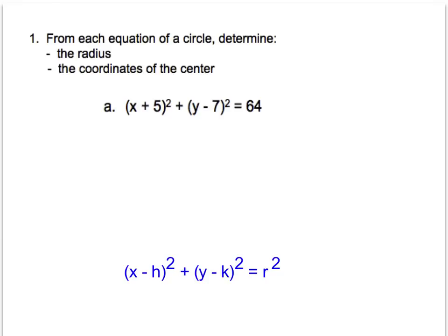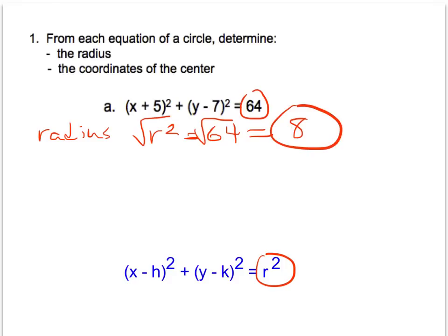And so for the radius, it's helpful to remember that this number represents the radius squared. And so we need to remember that in order to find the radius, all we need to do is find the square root of that number. So our radius in this equation is 8.